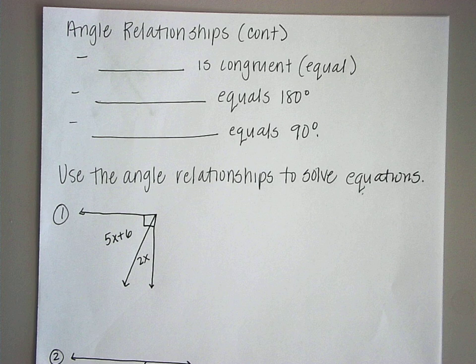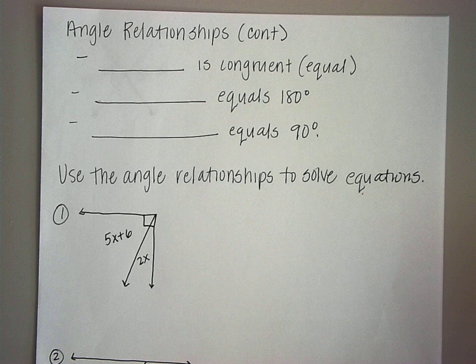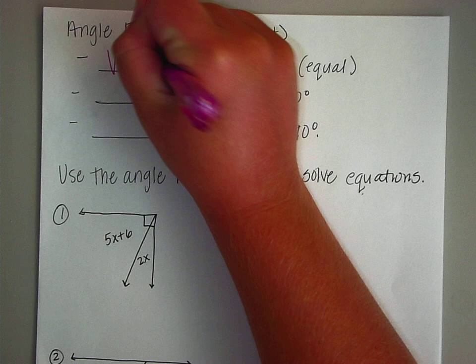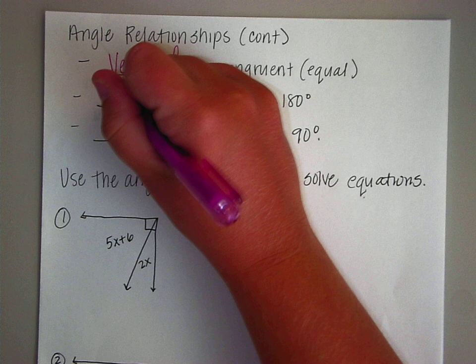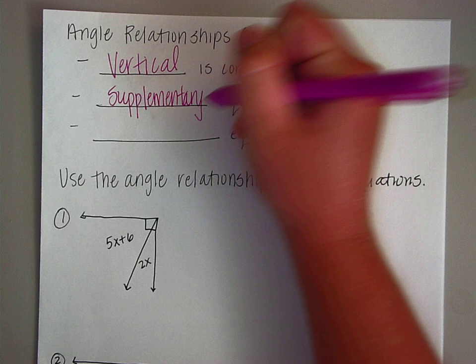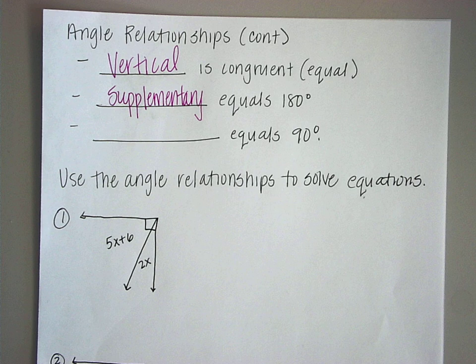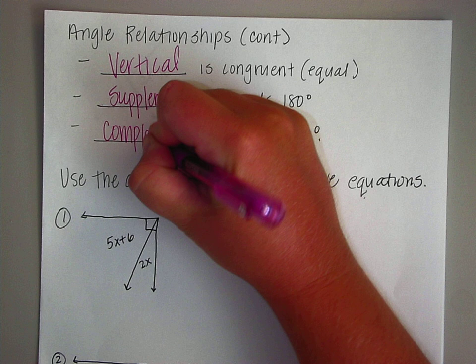Now we're going to use angle relationships to solve for variables. Let's review. What type of angle relationship was congruent? Vertical. What type of angle relationship equaled 180 degrees? Supplementary — it forms a straight line. What type of angle relationship equals 90? Complementary.